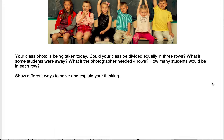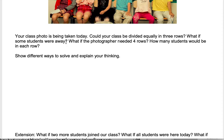This activity gives a scenario where a class photo is being taken and the photographer is looking for different ways to arrange the kids. It asks about dividing the class equally into three rows, and what if some students were away — you get to choose how many. First, think about how many students are in your class. If you learn at home, imagine a class of somewhere between 15 and 30 students and work with that number.